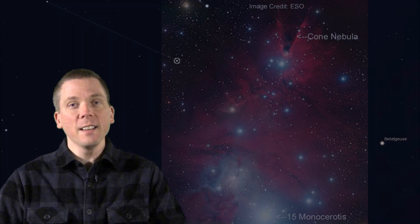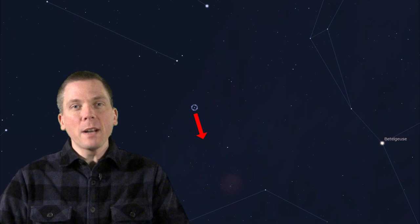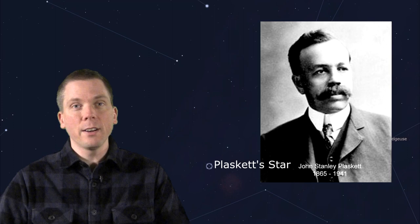Now continue on that Xi Geminorum, 15 Monocerotis line. Half a binocular field from 15, there's a unique 6th magnitude star. This is Plaskett's star, named for Canadian astronomer John Stanley Plaskett, who discovered its binary nature in 1922. Very few stars have proper names like this.